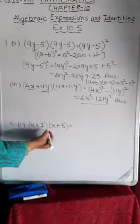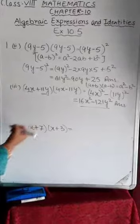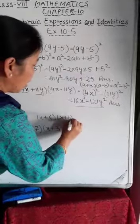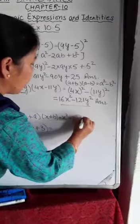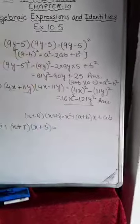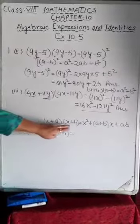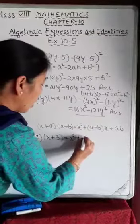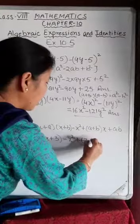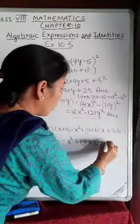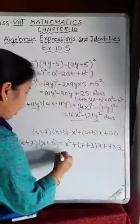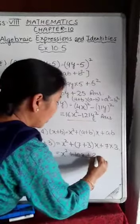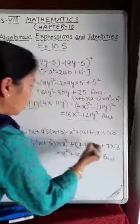The fourth part is (x + 7)(x + 3). Using identity 4, (x + a)(x + b) = x² + (a + b)x + ab, with a = 7 and b = 3: x² + (7 + 3)x + (7 × 3) = x² + 10x + 21.